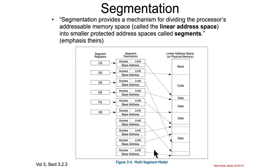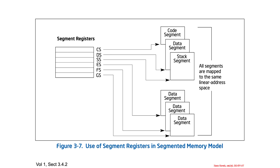You could have segmentation being all super complicated, where you've got this segment and that segment, and they're all just little chunks of the linear address space, but nobody actually does things that way. You could have a less complicated version where you've got one segment for code, one segment for data, one segment for stack, and then three extra segments, with limitations based on how many segment registers you have. But nobody does it that way either.